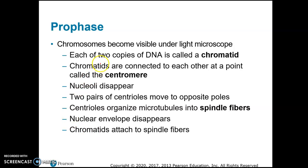During prophase, the chromosomes become visible — the chromatin condenses and forms chromosomes. Each of the two copies of DNA is called a chromatid or a sister chromatid. The chromatids are connected at the centromere, which is what makes the chromosome look like an X. The nucleoli, which produce ribosomes, dissolve and disappear.